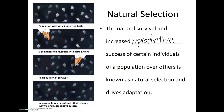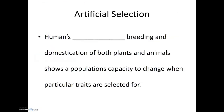While natural selection is how populations evolve in nature, artificial selection is something that humans do by selectively breeding certain organisms. This happens through domestication and cultivation of both plants and animals. As humans, we select a particular trait or characteristic we're interested in and breed the offspring that have those traits. We can do this for several generations to get remarkably different types of organisms from a starting species.